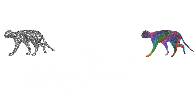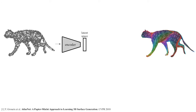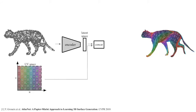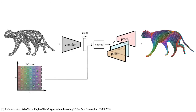Our method leverages the standard AtlasNet architecture, which represents a reconstructed 3D surface through an atlas — a mapping from 2D to 3D. Specifically, an input point cloud is first encoded using a PointNet encoder to produce a latent code. Then, 2D points are sampled from a square in UV space and passed together with the latent code through the decoder, mapping to a point on the 3D surface.